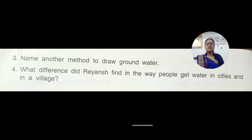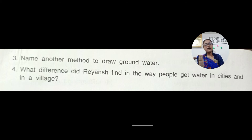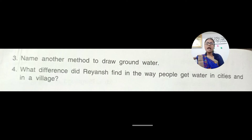And the fourth question is: what difference did Riyanj find in the way people get water in cities and in villages? Riyanj found that in cities, people get water through the water supply system, meaning through a tap. And in villages, people draw water from wells.